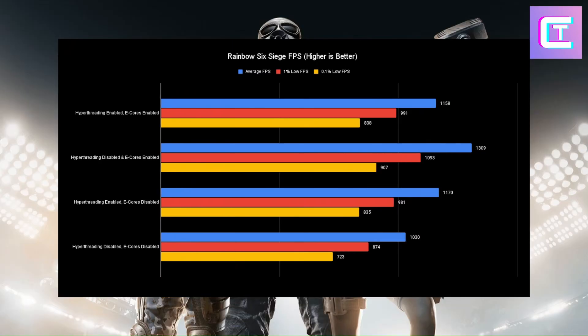Now we have Rainbow Six Siege, running in Vulkan with the built-in benchmark. Hyperthreading disabled and E-cores enabled fully destroys everything else by over 100 FPS — it's honestly insane how much better this configuration is. It wins in the lows as well. The lowest 1% low with hyperthreading disabled and E-cores disabled is still 723 FPS, so all configs are very high. But if you want the purest max FPS, disable hyperthreading and leave your E-cores enabled.